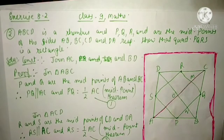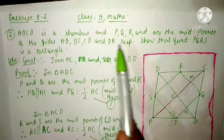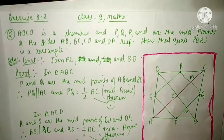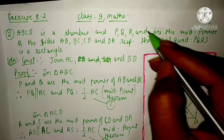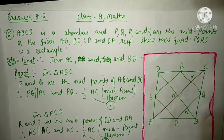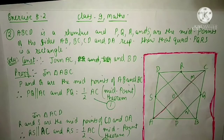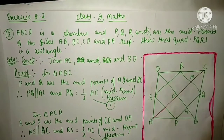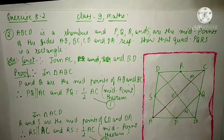Now see the second question. ABCD is a rhombus and P, Q, R and S are the midpoints of the sides AB, BC, CD and DA respectively. So the quadrilateral PQRS is a rectangle. Now ABCD is a rhombus, that means all its sides will be equal.